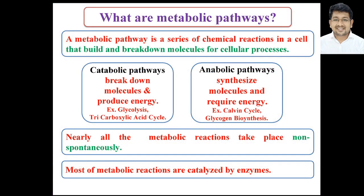Dear students, first of all we must understand what is a metabolic pathway. A metabolic pathway is basically a series of chemical reactions that can build or break down molecules for cellular processes. It has the ability to create a molecule or degrade some molecule in your cell. On the basis of this, metabolic pathways are classified into two types: catabolic pathways and anabolic pathways. A catabolic pathway leads to the breakdown of molecules and produces energy during this breakdown.